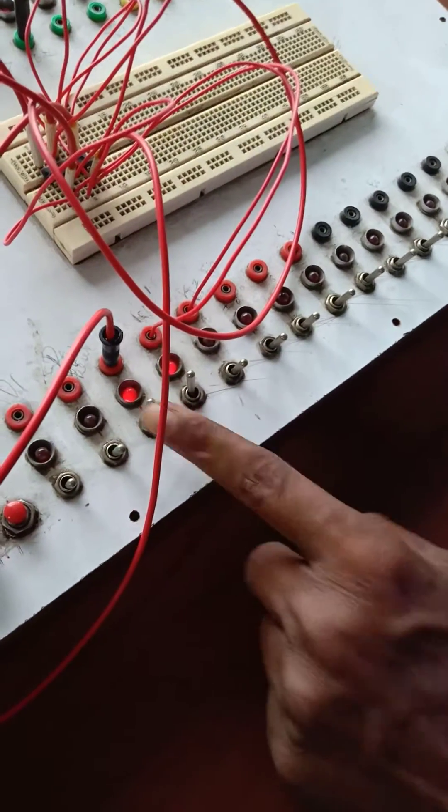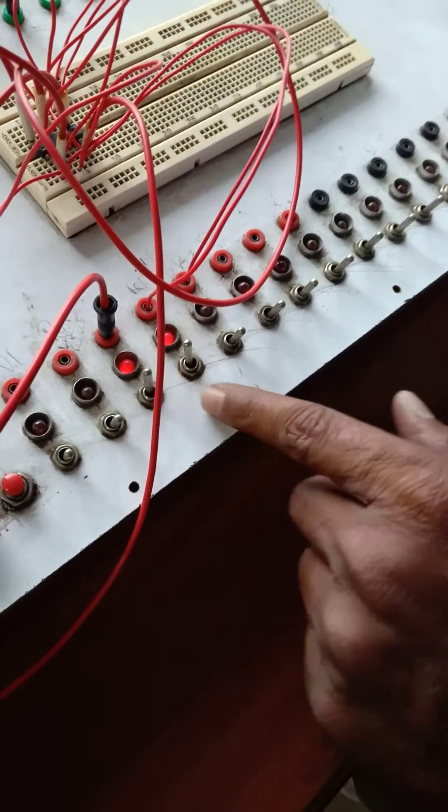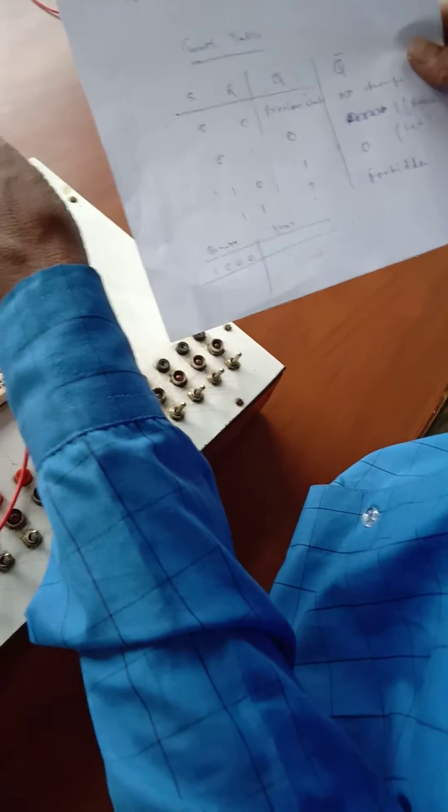So this is our S and this is our R and this is our clock. You have to turn on the clock. So first if you give 0, 0, 0, that means there is no change, no output.